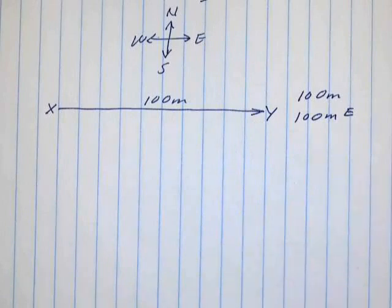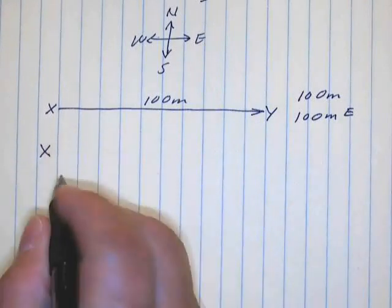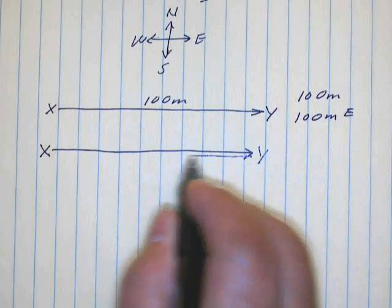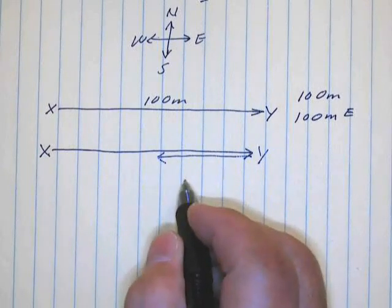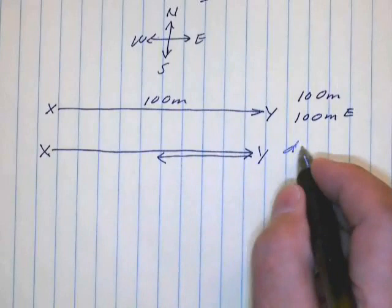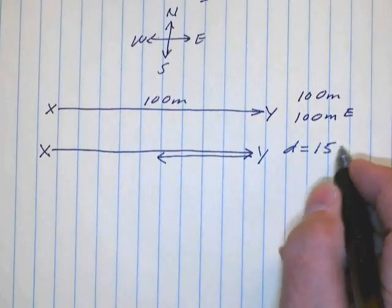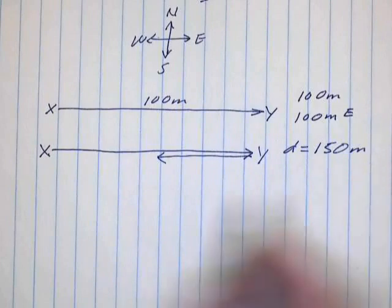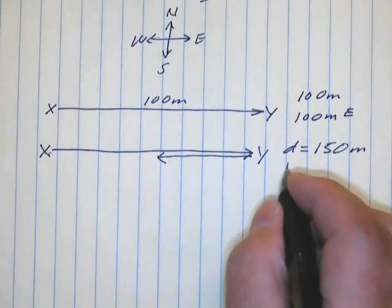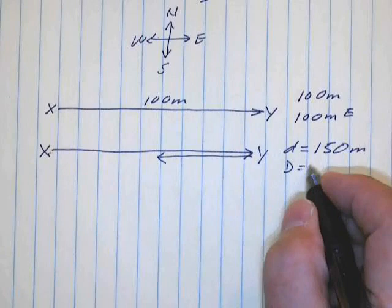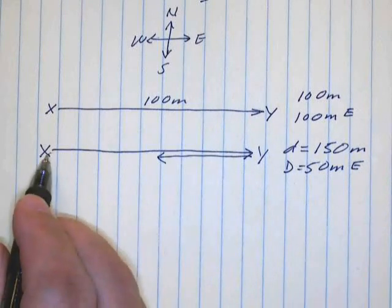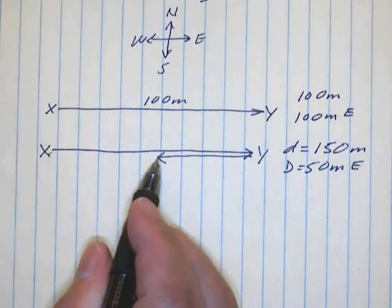Now let's look at a second example. Let's suppose that we start at point X again and walk to point Y and then turn around and walk halfway back again. In this case, the distance we travel is going to be 150 meters. And yet our displacement — the distance and direction between the starting point and ending point — is 50 meters east, because we have been displaced 50 meters from point X in the direction of east.